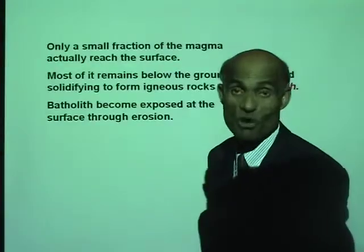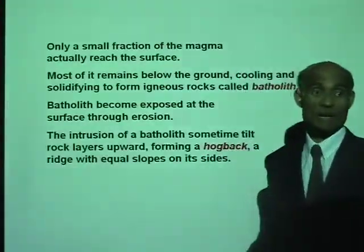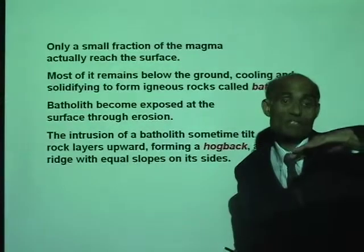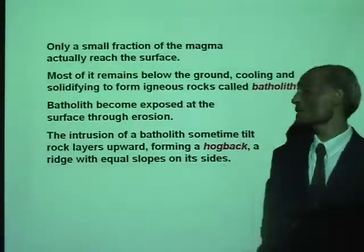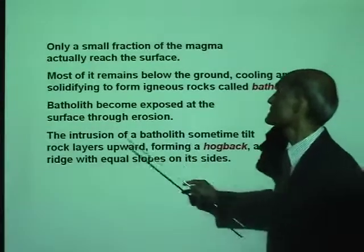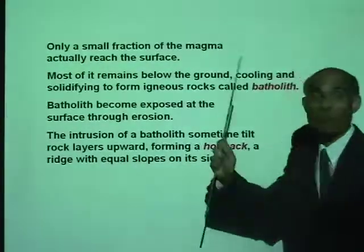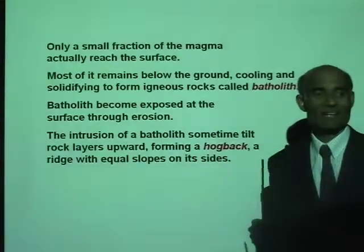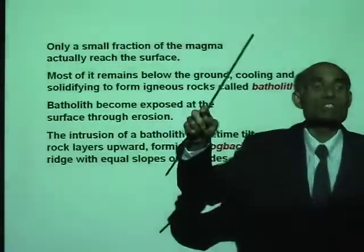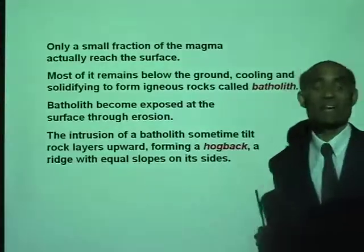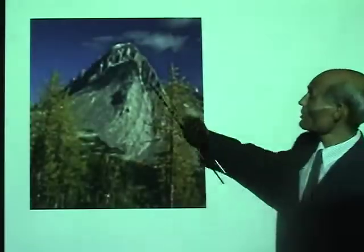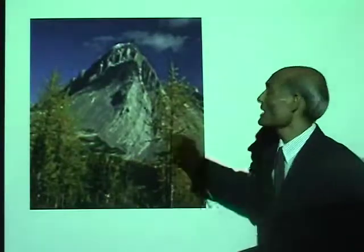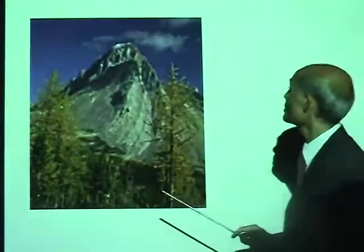This kind of rock is rather common. The intrusion of a batholith — that is, as it juts out of the earth's surface — sometimes tilts rock layers upward, forming what is called a hogback: a ridge with equal slopes on its sides. This is a good example of a batholith, with equal slopes on both sides.